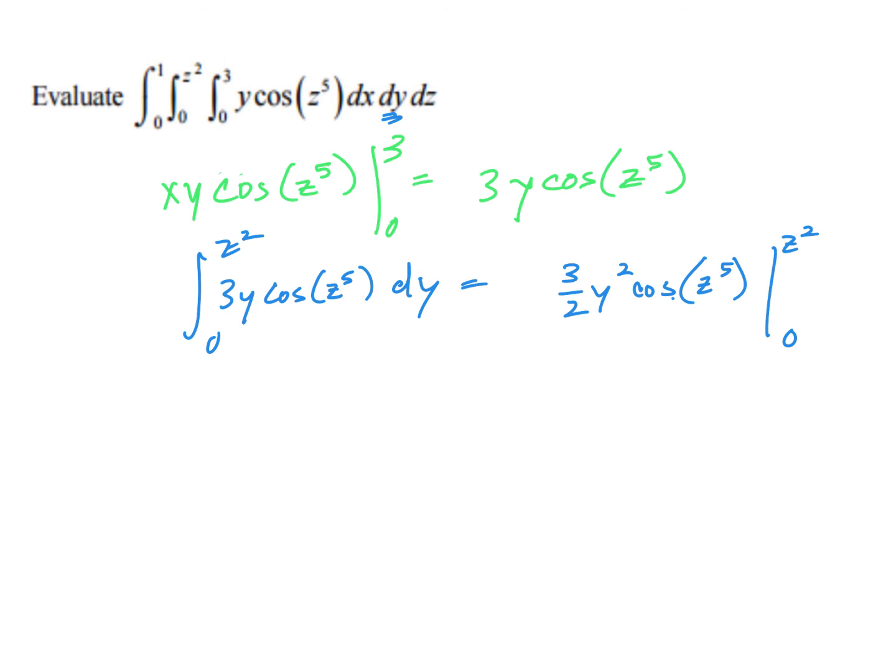So if I plug in z², of course, I have z² squared. So I'd have 3/2 z to the 4th, which is pretty handy for what's about to come up. All right. So now we're going to integrate this from 0 to 1. I should just mention if we plug in 0, we would get 0.